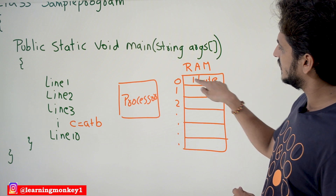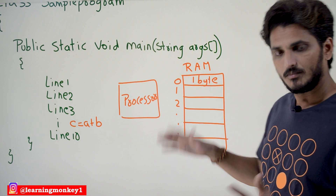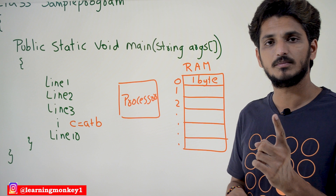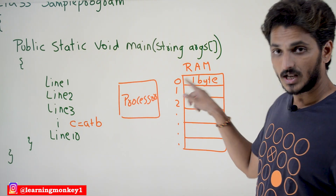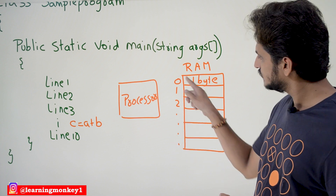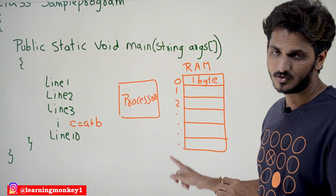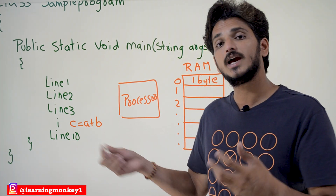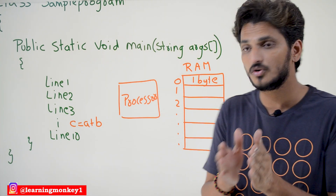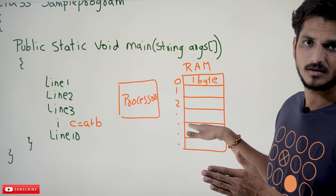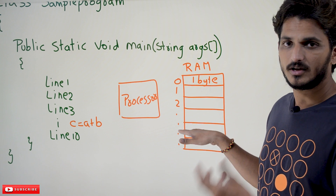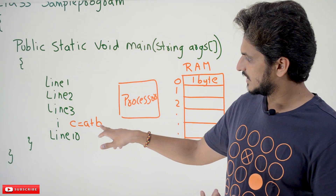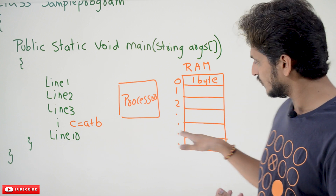Random access memory contains multiple lines — first line, second line, and so on. Each line is one byte, meaning eight bits. The line address starts from 0, 1, 2, 3 — this we call the zeroth line, first line, second line, third line, fourth line, and so on. Suppose A was assigned a value of 5. That value 5 will be stored in line number 10 — assume that the value 5 is stored in line number 10, and it is given the name A. Similarly, B — the value of B is stored in the 20th line.